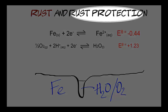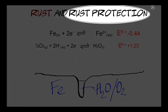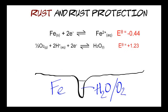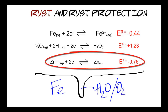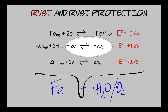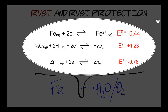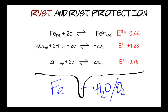Next, let's take a look at rust protection using zinc in a process known as galvanizing. This will introduce a third half-equation: the half-equation for the reduction of Zn2+ ions to zinc, with an E-theta value of minus 0.76 volts. That makes it lower than both of the other half-equations, and that's going to be significant. So there we have the three half-equations. The one with the largest reduction potential is the one in the middle: plus 1.23 volts. And the one with the lowest reduction potential is the zinc half-equation at the bottom.